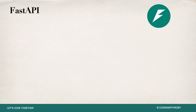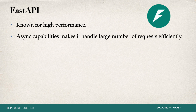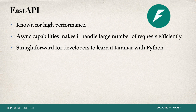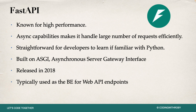Let's check out FastAPI for performance, because performance is a big thing, but it's not necessarily the biggest thing at all times. FastAPI is known for high performance thanks to its async capabilities, which allow it to handle a large number of requests efficiently. This makes it straightforward for developers to learn if they're already familiar with Python. It's built on top of ASGI — the Asynchronous Server Gateway Interface — and it's a relatively new framework, released in 2018. It is typically used as the back end for web API endpoints.